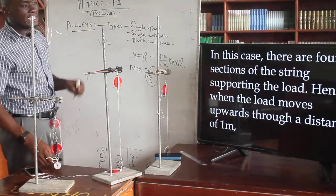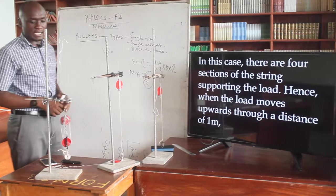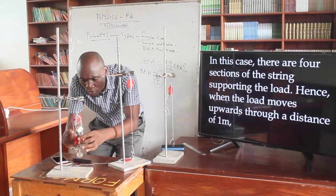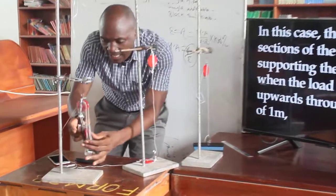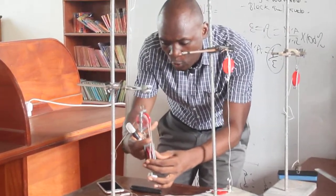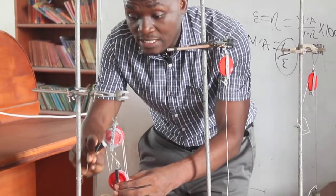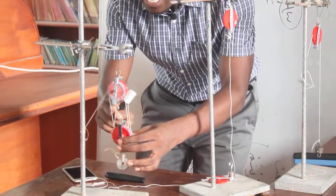Now, as we move forward, in this case there are four sections of the string. You can see from here, in front of you on the screen, you can see one, two, three, four.